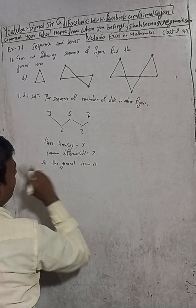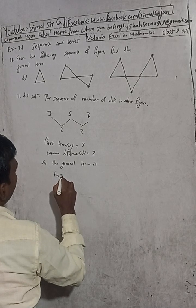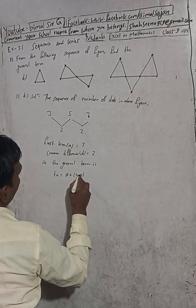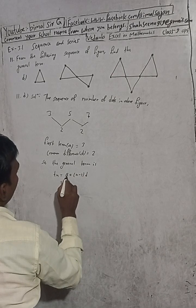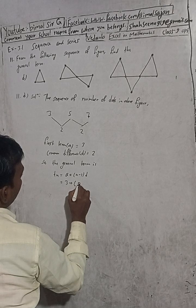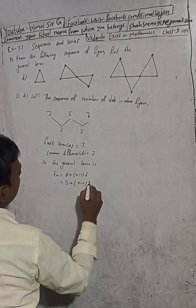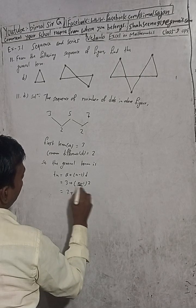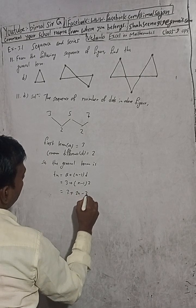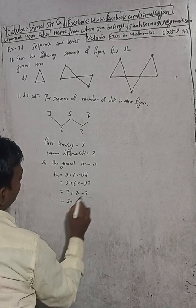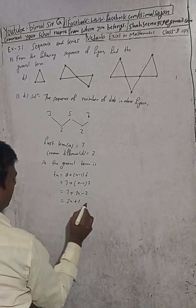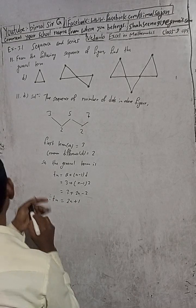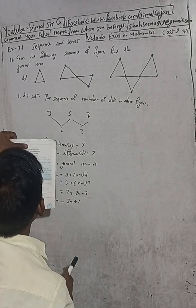So the general term is Tn equal to A plus N minus 1 into D. A means 3 plus N minus 1, and D means 2. So this is 3 plus 2N minus 2, which gives 2N plus 1. Therefore Tn is equal to 2N plus 1. The answer in the book is 2N plus 1.